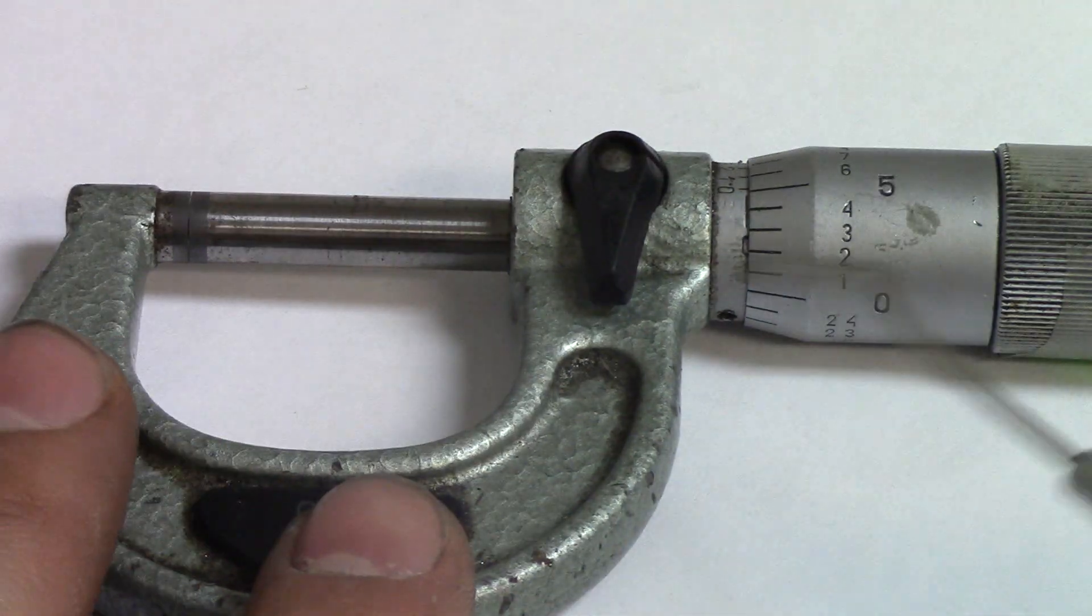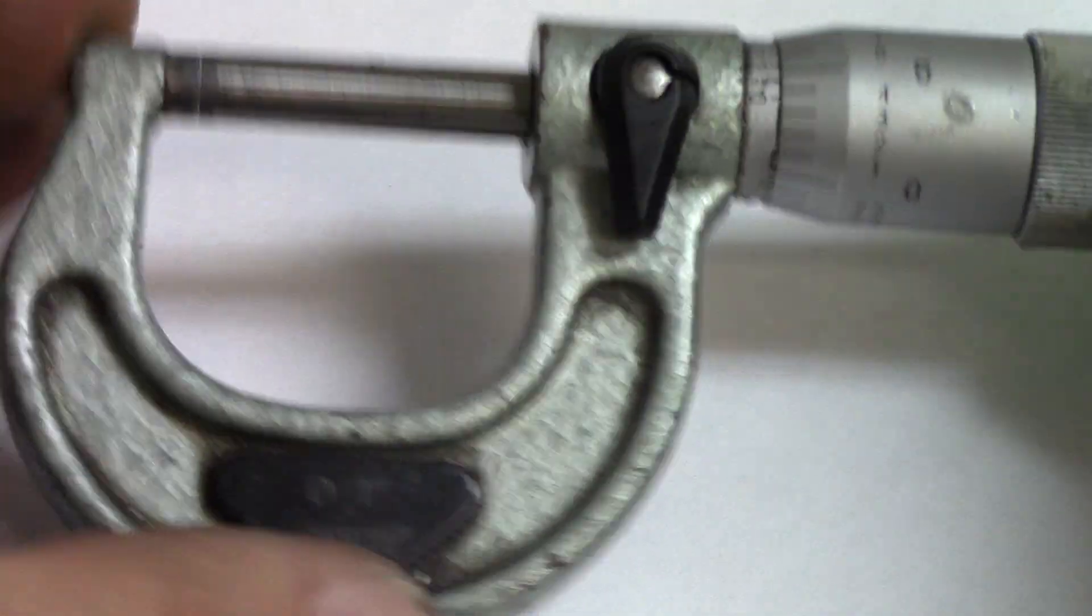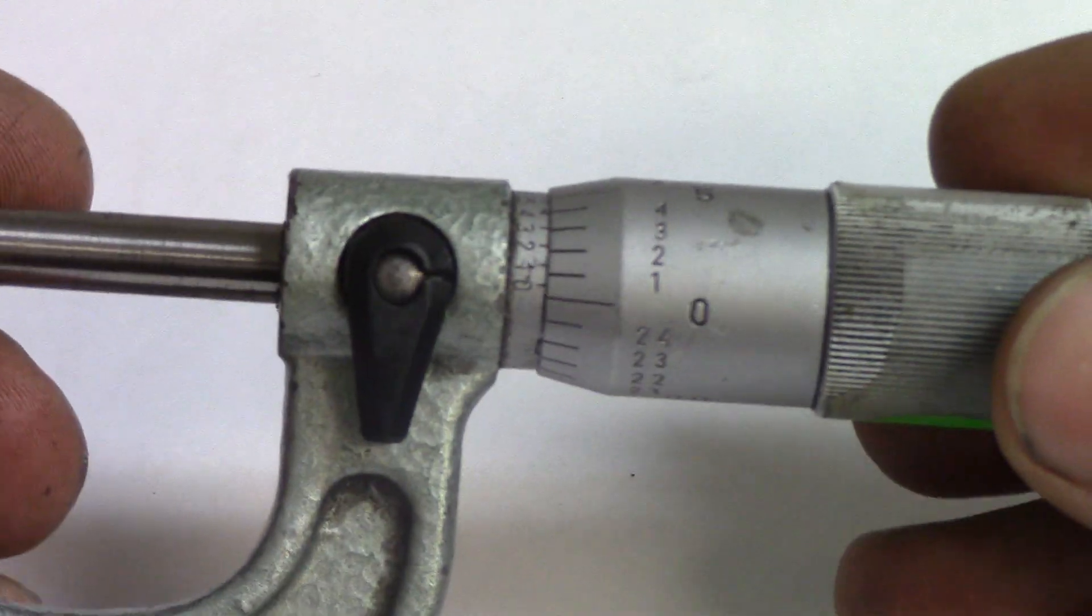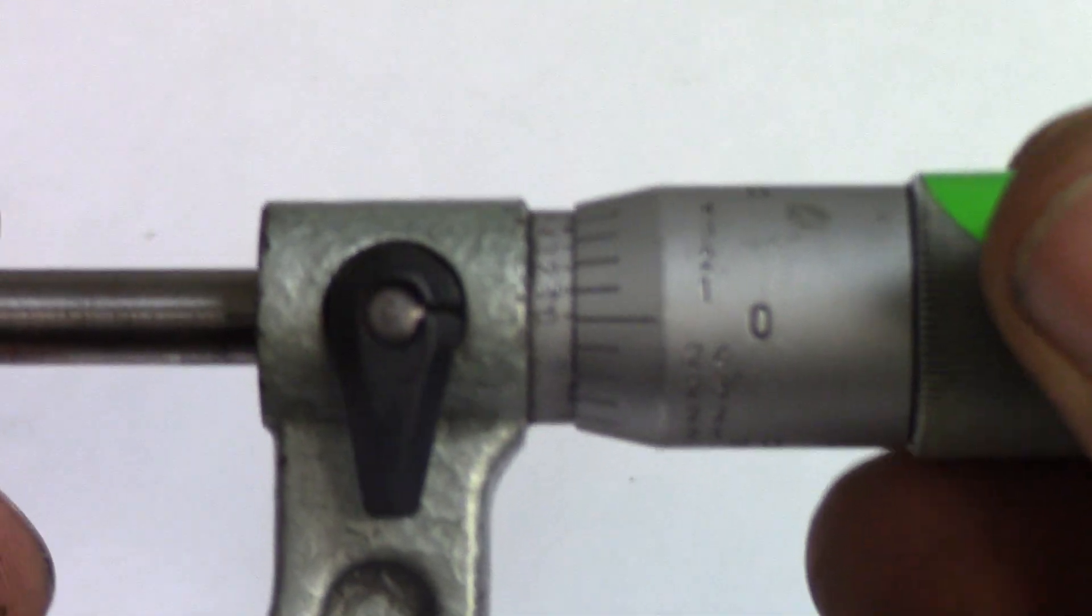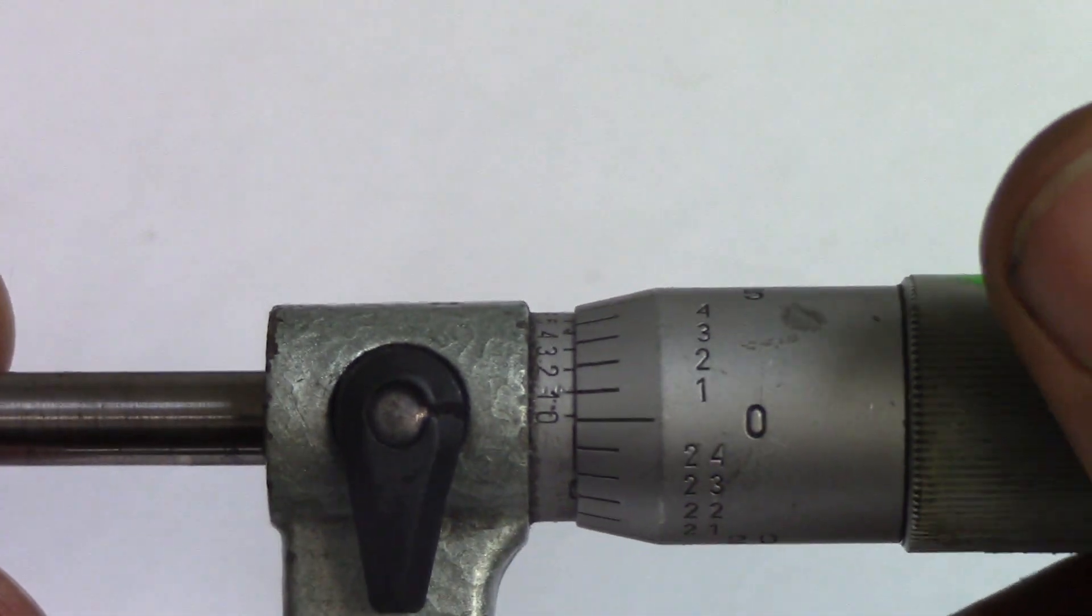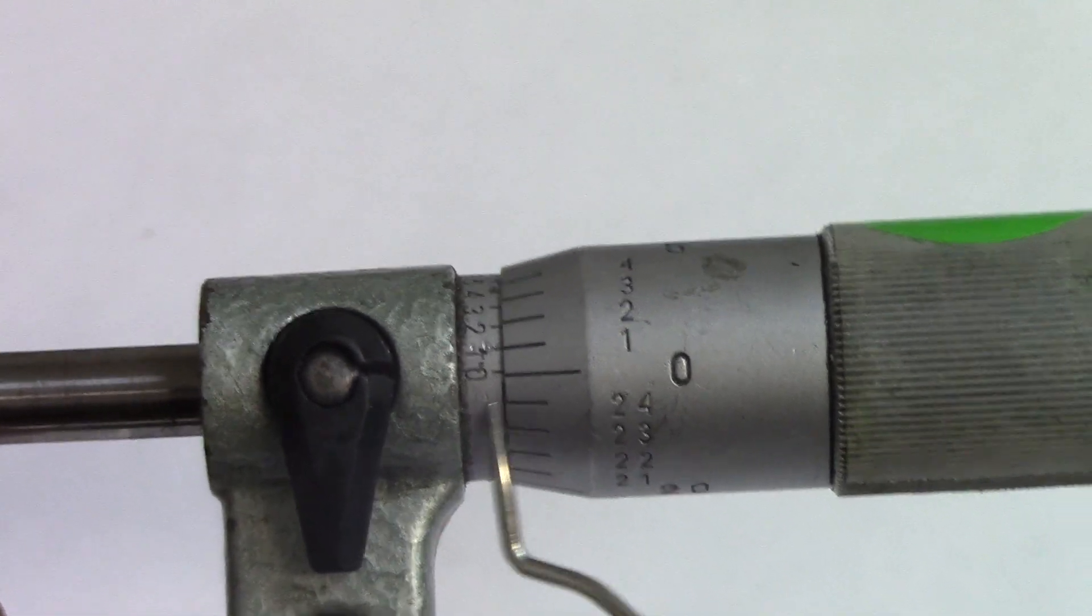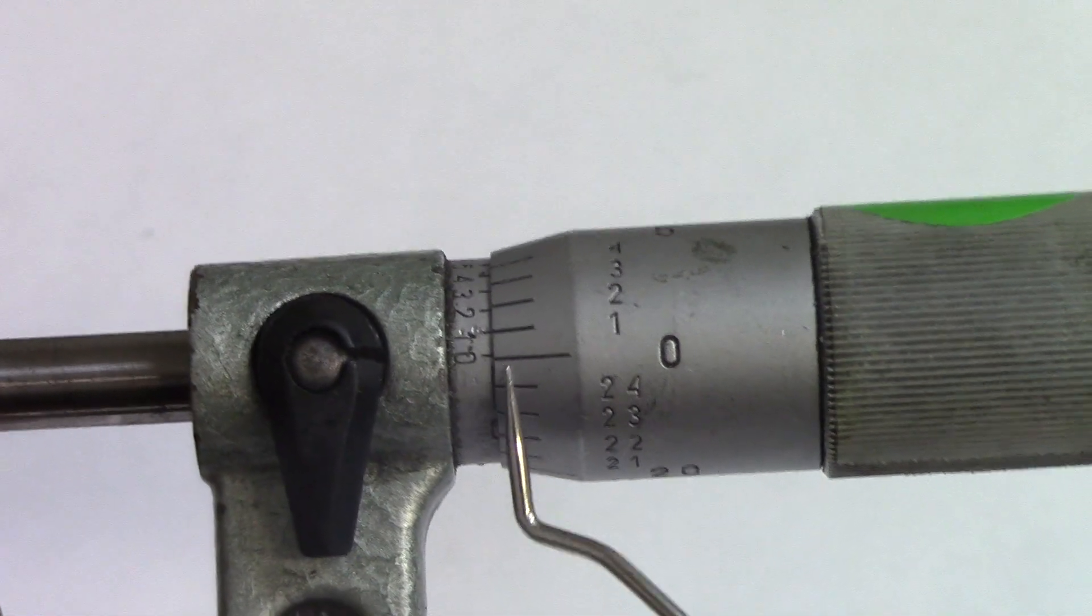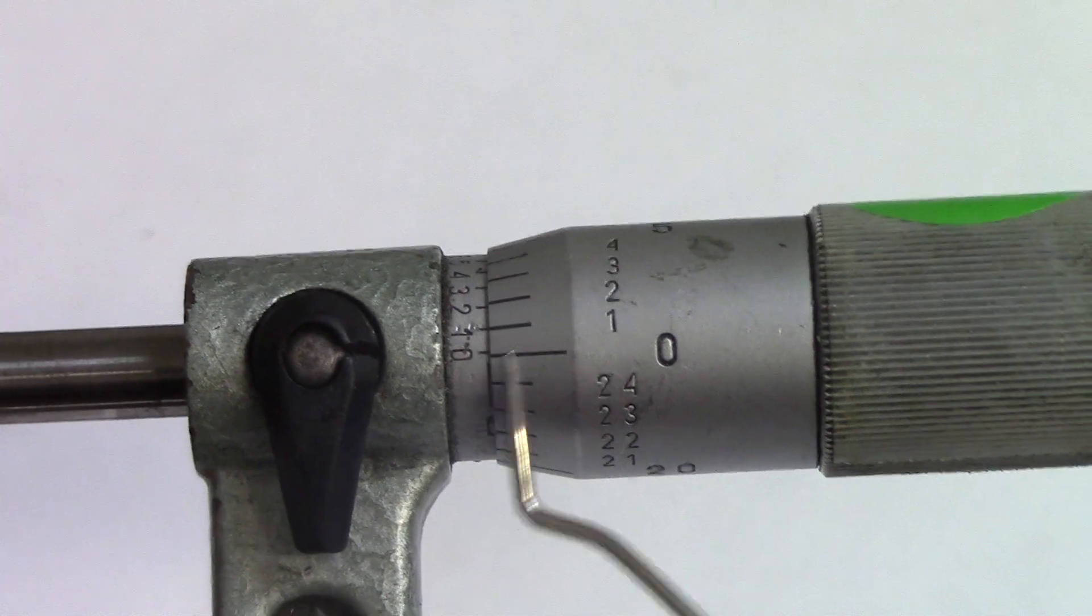This video is just for how to read micrometers. The very first thing you do when you get a set of micrometers is check and make sure that it lines up with zero. We'll have a separate video on how to fix it if it's off a little bit, but for this tutorial we'll assume that these two lines are lined up.